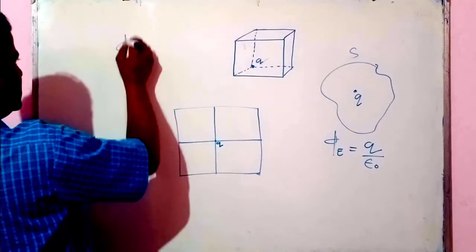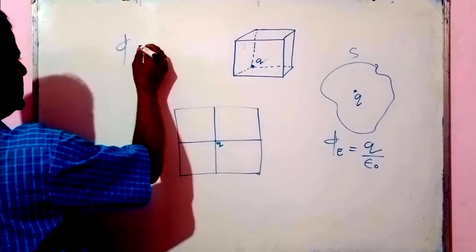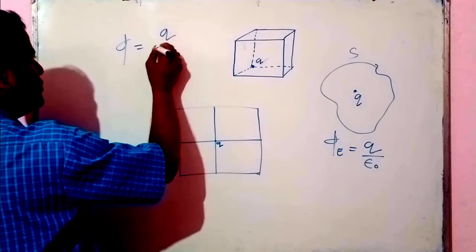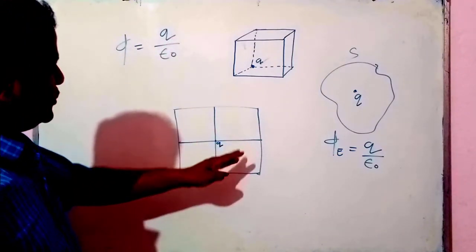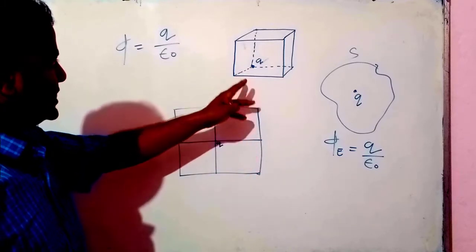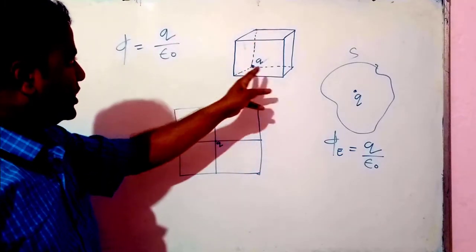Therefore, we get for this big cube phi equal to q by epsilon naught. But we have to find out the electric flux through one small cube.